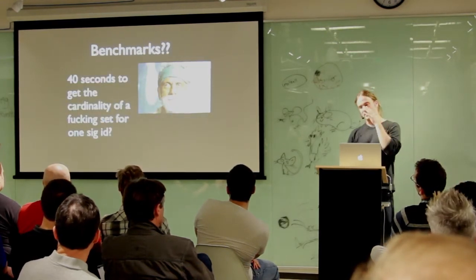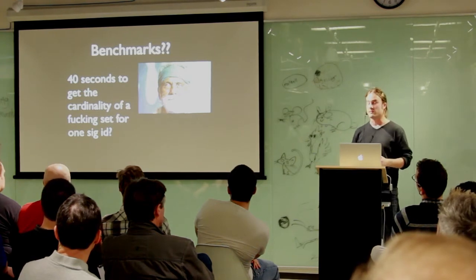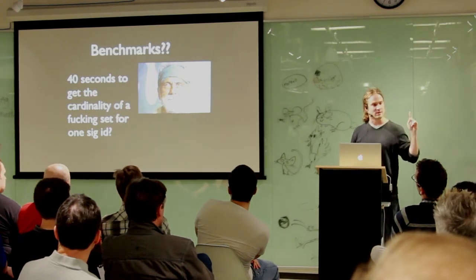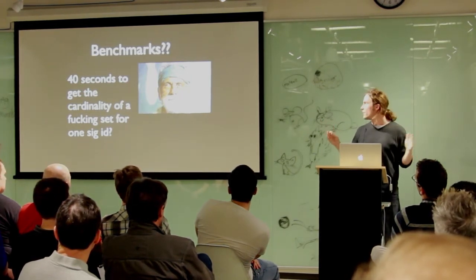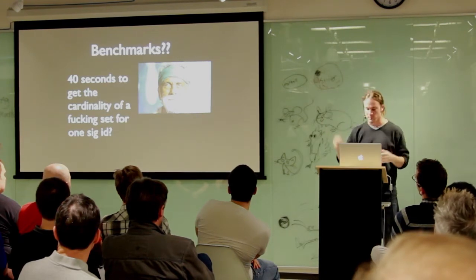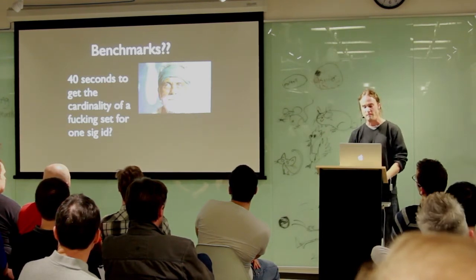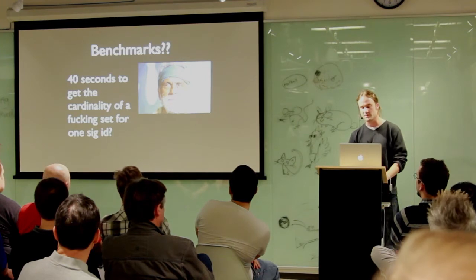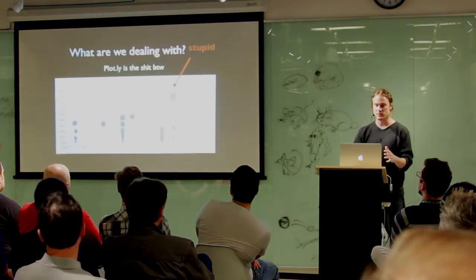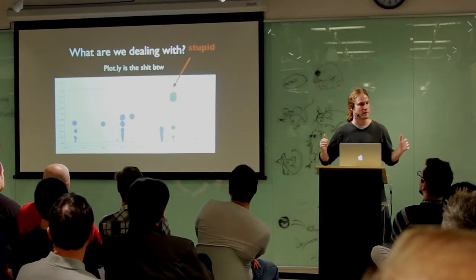So after a while, it's like, how long does this take? 40 seconds to get the cardinality of one signature. That's insane. We need these answers like this. We need it sub second. So we started looking around. But of course, to do that, you really have to define your problem first. To jump into a problem without really defining it is really stupid.